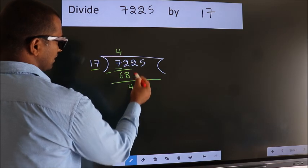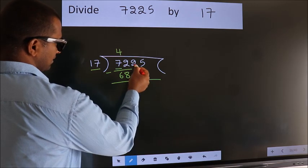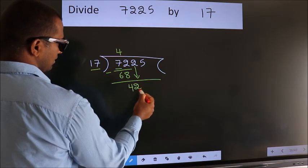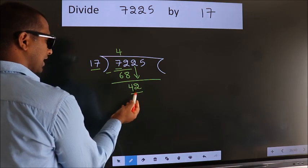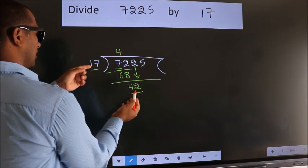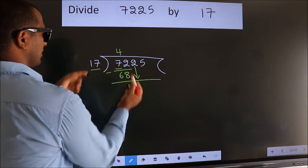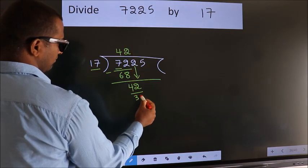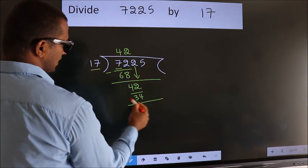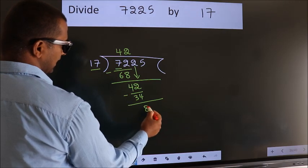After this, bring down the next number. So 2 down, giving us 42. A number close to 42 in the 17 table is 17 times 2, which is 34. Now we subtract. We get 8.